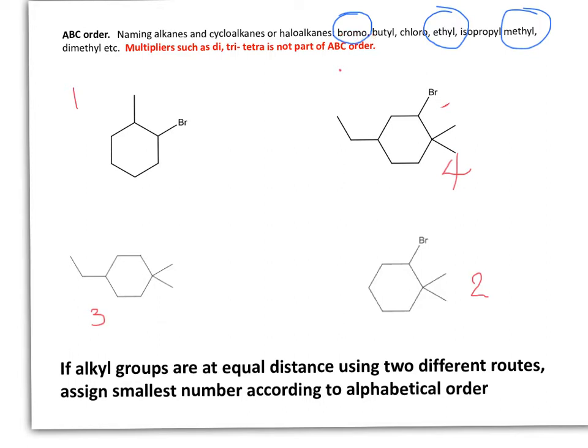Now let's name the first molecule. We know that this is a cyclohexane because it has 6 carbons. After knowing what the substituents are, we need to label the ring. When it is a monosubstituted cyclohexane, we don't assign numbers. But when it has two substituents, we need to assign carbon number 1 and 2.